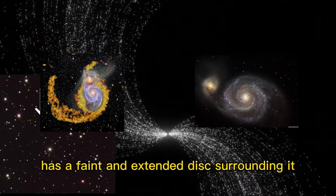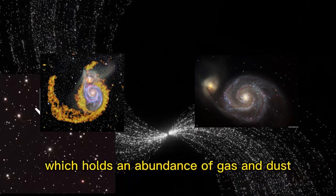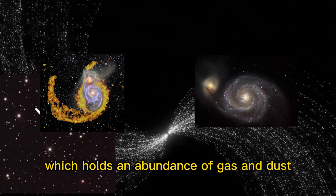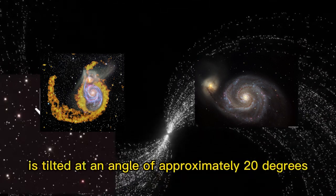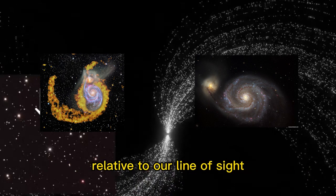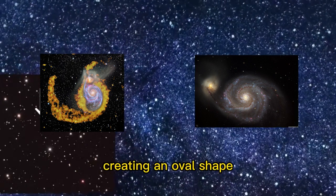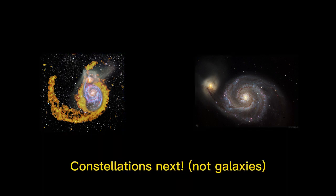In addition to its striking spiral arms, the Whirlpool Galaxy has a faint and extended disk surrounding it, which holds an abundance of gas and dust. The galaxy's disk is tilted at an angle of approximately 20 degrees relative to our line of sight, creating an oval shape. Thank you for watching.